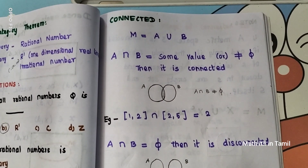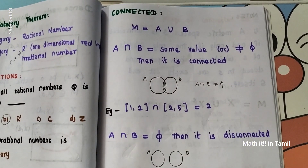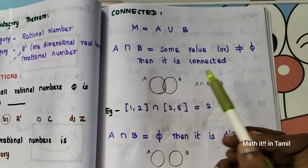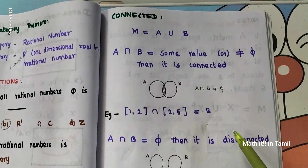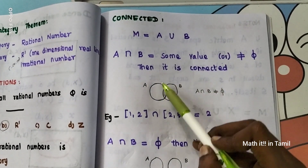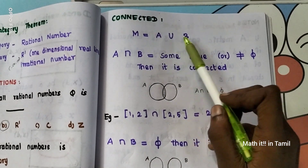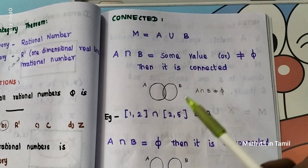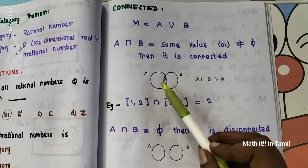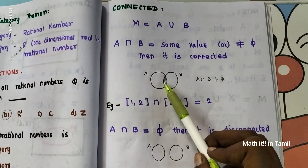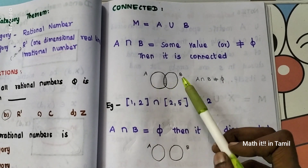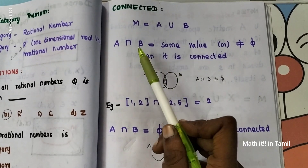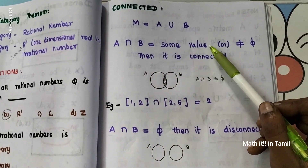Connected means that we can find a connected space. So, some space will be connected. If we can find the definition, we will talk about sets A and B. The two sets form a union. Now, if we say A and B, we will talk about a common point. The common point is the intersection. If we take A intersection B, the value is not empty, then A and B are connected.